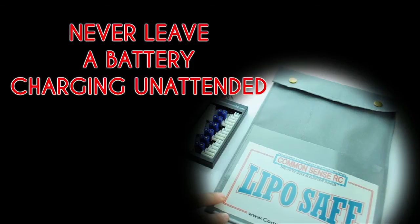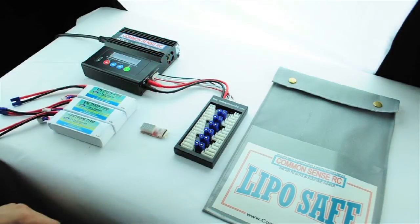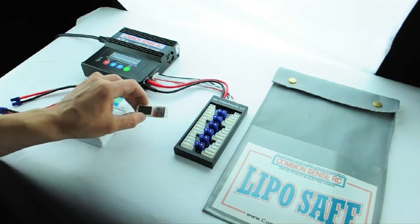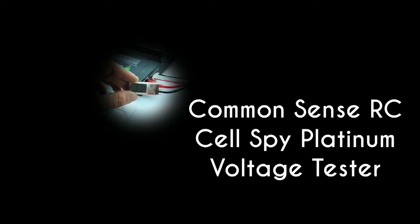So the battery should never be left to charge unattended. The last thing you'll need is a voltage tester to check the batteries before charging. We'll be using the Common Sense RC Cells by Platinum voltage tester.